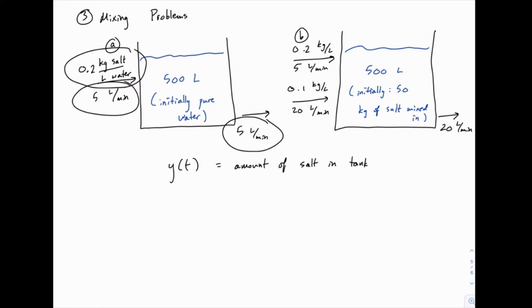The inlet flow carries 0.2 kilograms of salt per liter — that's the mixture of salt and water coming in. So in the long term, if we left this mixing for a long time, eventually every liter of water in this tank would carry 0.2 kilograms of salt, and we would end up with 100 kilograms of salt mixed into this 500 liter tank.